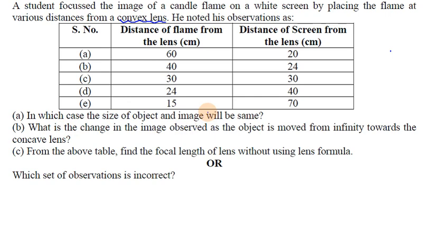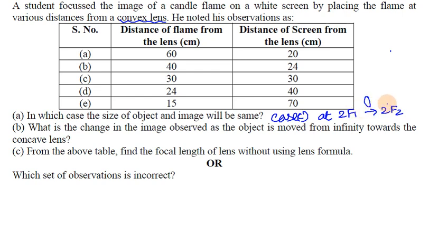At 2F, the object and image will be the same size. When the object is placed at 2F1, the image will form at 2F2, and since 2F1 and 2F2 are equal distances from the lens, the image size equals the object size.